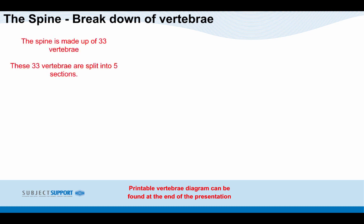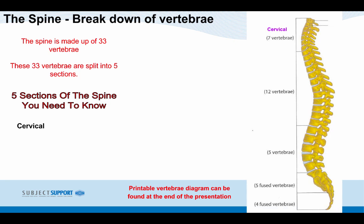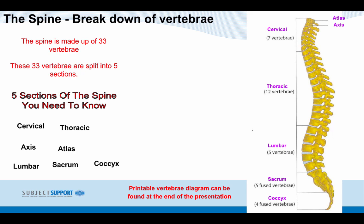The spine is made up of 33 vertebrae. These 33 vertebrae are split into five sections. The five sections of the spine you need to know: the cervical — the top seven vertebrae, including the atlas and the axis (the top two vertebrae); the thoracic — the twelve vertebrae just below the cervical; the lumbar — this is often where people have lower back pain; the sacrum; and finally the coccyx, which are four fused-together vertebrae at the bottom of your spine.